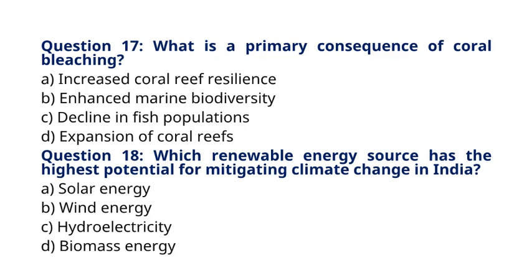Question 18: Which renewable energy source has the highest potential for mitigating climate change in India? A. Solar energy. B. Wind energy. C. Hydroelectricity. D. Biomass energy. The correct answer to question 18 is option A: Solar energy. Explanation: India has abundant solar resources, making solar energy the renewable energy source with the highest potential for mitigating climate change.